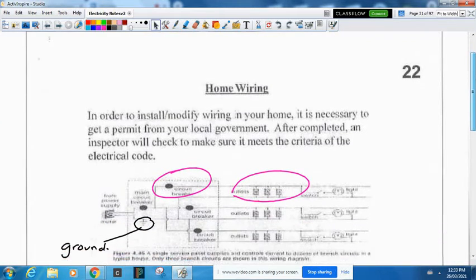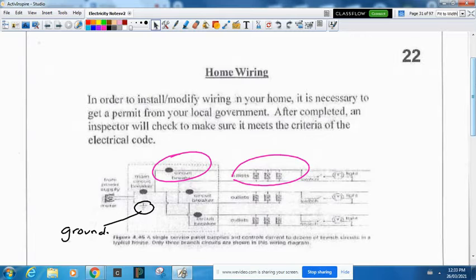In household wiring, to install or modify wiring in your house, it's necessary to get a permit from your local government. After completing the work, the inspector will come check that it meets all the criteria.